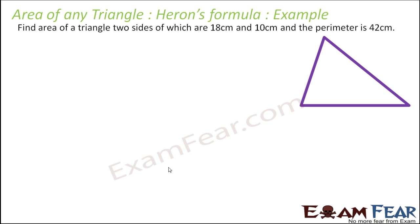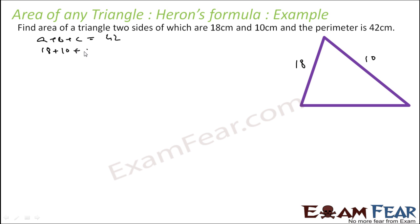Next, we find the area of a triangle where two sides and the perimeter are given. The perimeter is 42 cm, and two sides are a = 18 cm and b = 10 cm. So the third side c = 42 − (18 + 10) = 14 cm.